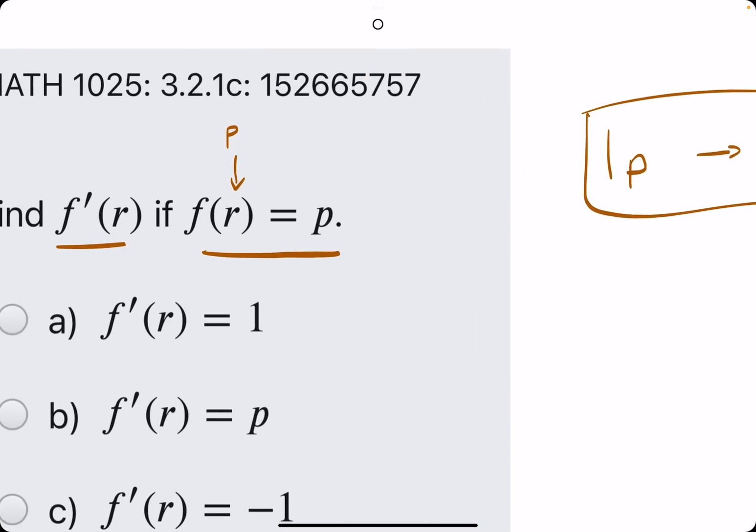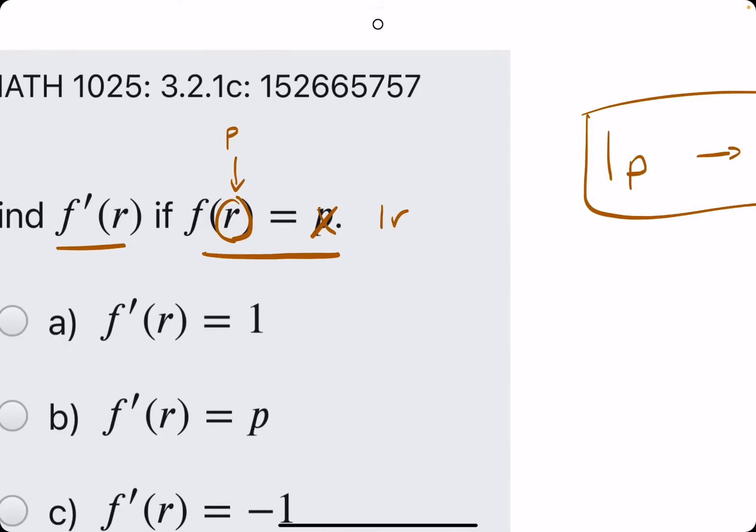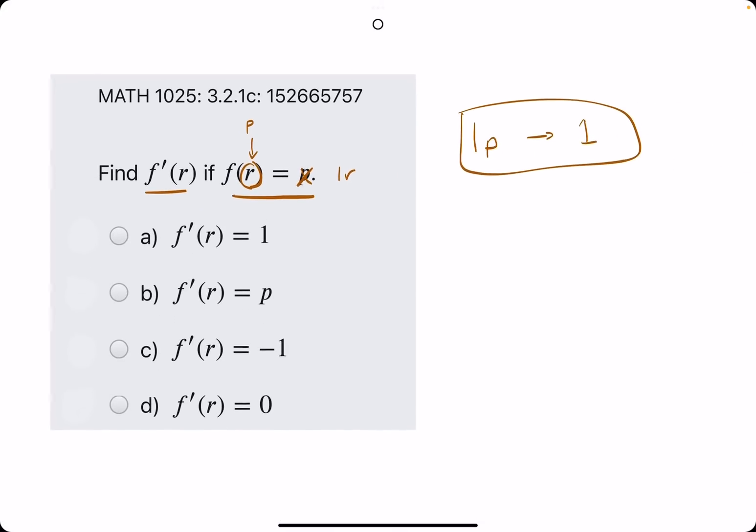But in this case, the input variable is r. So really, if it were 1r, then the derivative would be just 1.